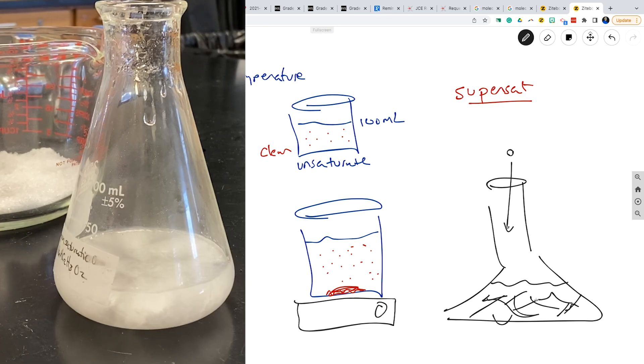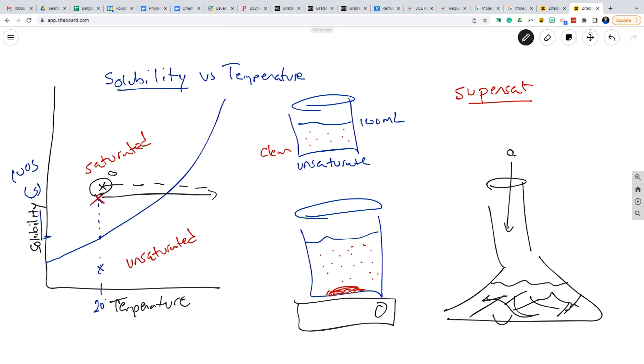What happens is it all came out of solution immediately because it needed something for it to crystallize on. So it's important that this flask was super clean. Otherwise, it could even happen by itself.